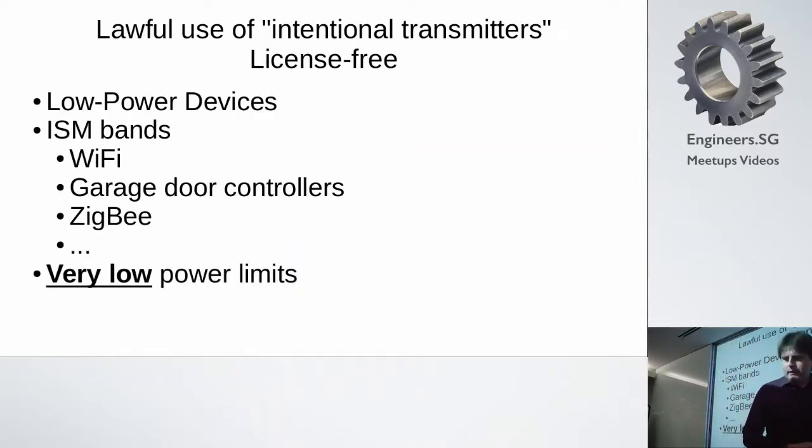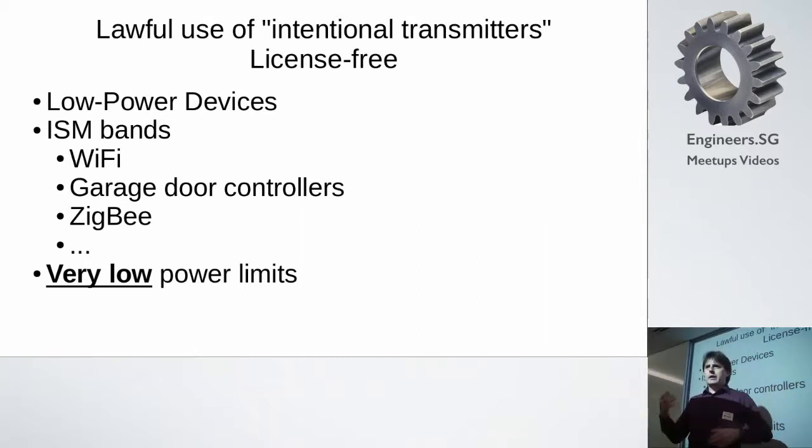To put it into perspective, there are basically two ways to use intentional transmitters. Things that deliberately transmit signal tend to fall into a license-free and a licensed category. The license-free is typically low-power devices: industrial, scientific, and medical, the obvious ones. So Bluetooth, Wi-Fi, garage door openers, Zigbee, wireless microphones. Hundreds of different applications operate in some fairly small chunks of spectrum available for use without a station license or operator's license at very low power levels.